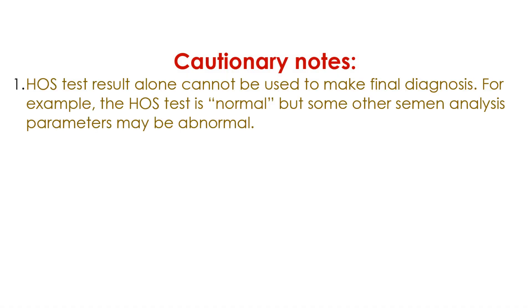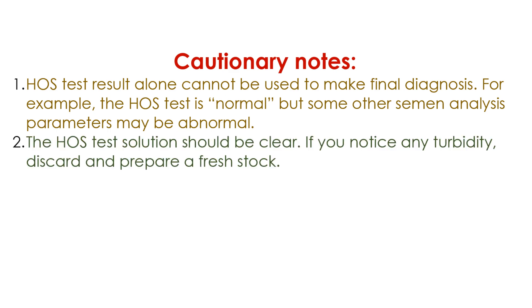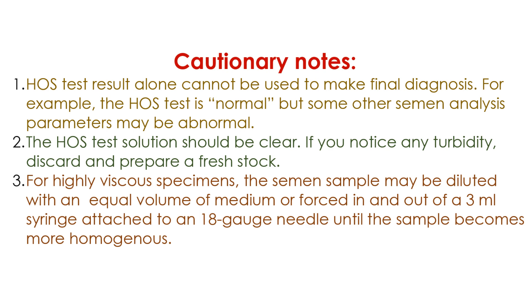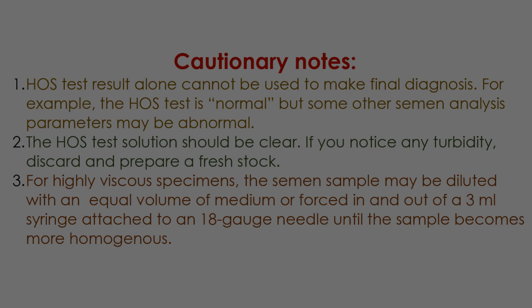Since only a single variable — membrane function — is measured, the results of the HOS test alone cannot be relied on; for example, the HOS test may be normal while other semen analysis parameters are abnormal. The HOS test solution should be clear; if turbidity is noticed, discard and prepare a fresh stock. For highly viscous specimens, the semen sample may be diluted with an equal amount of medium, or forced in and out of a 3 ml syringe attached to an 18-gauge needle until the sample becomes more homogeneous.